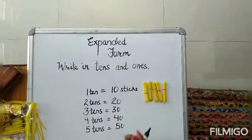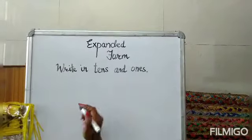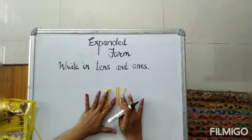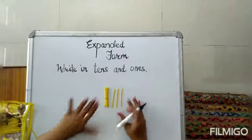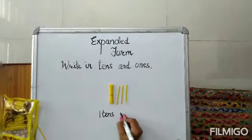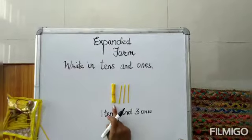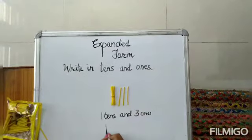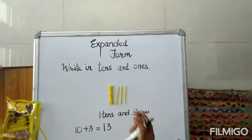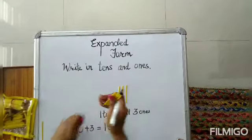Now if there is 1 bundle of 10 and 3 loose sticks — if I am saying 1 bundle of 10 and 3 loose sticks — that means 1 ten and 3 ones. So I have written 1 ten and 3 ones. That makes 13. When I add 10 plus 3, that is equal to 13. And if suppose I open them, you can count them and see they are total 13 in number.